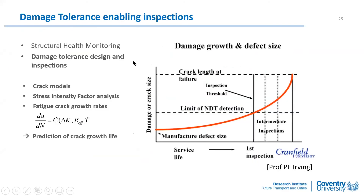The reason we calculate crack length versus fatigue life is to set the inspection regime for airline operators — establishing the initial period without inspection, then scheduling intermediate inspections every six months to ensure any developing cracks are caught in time.